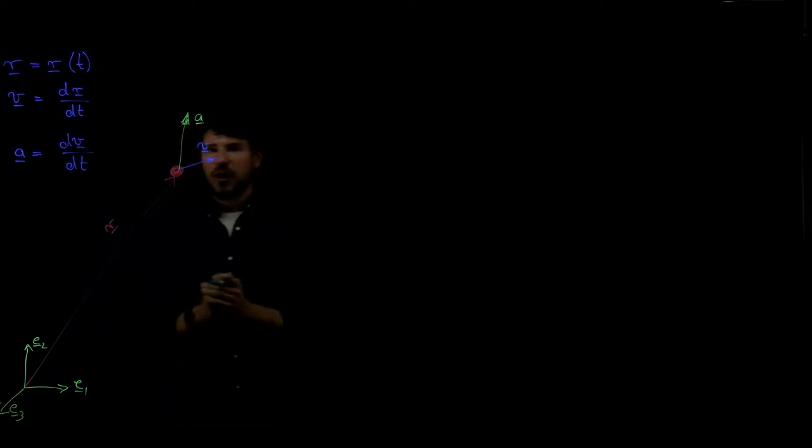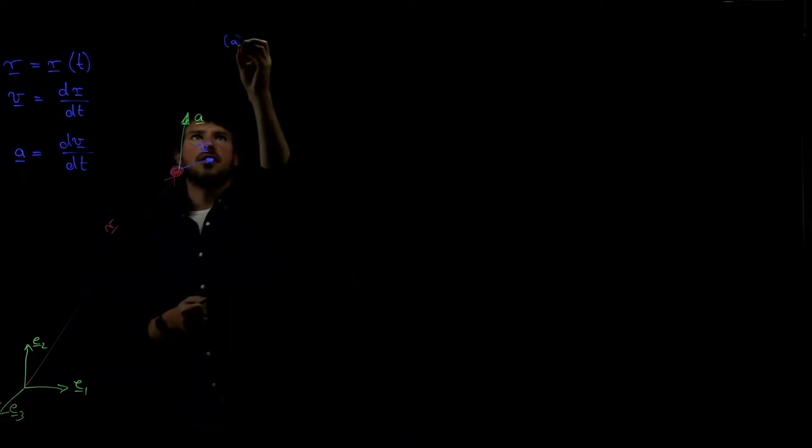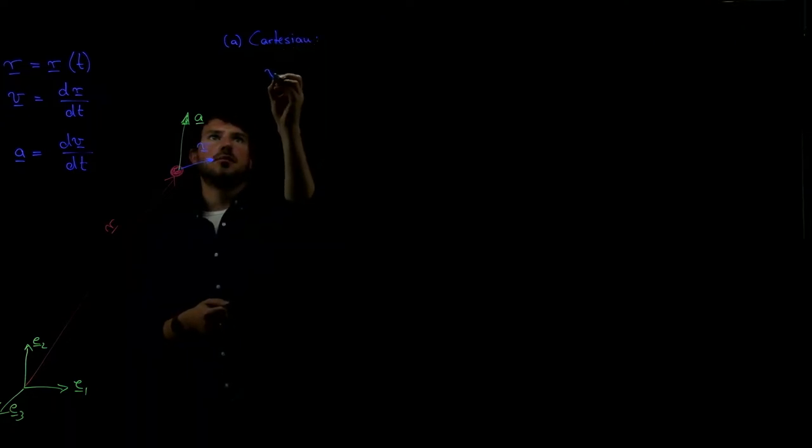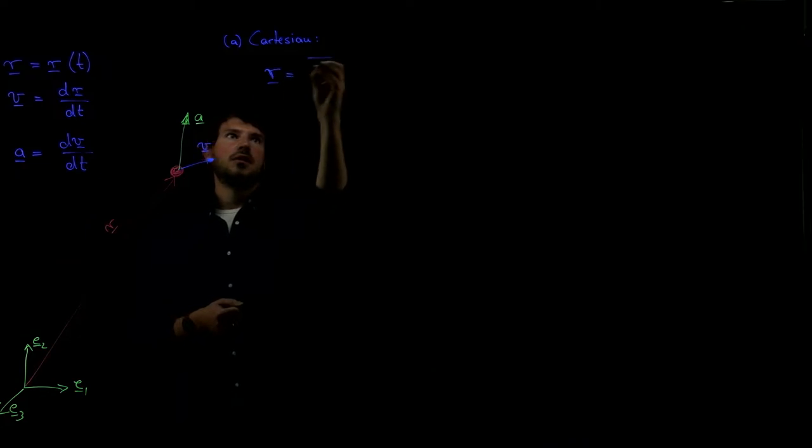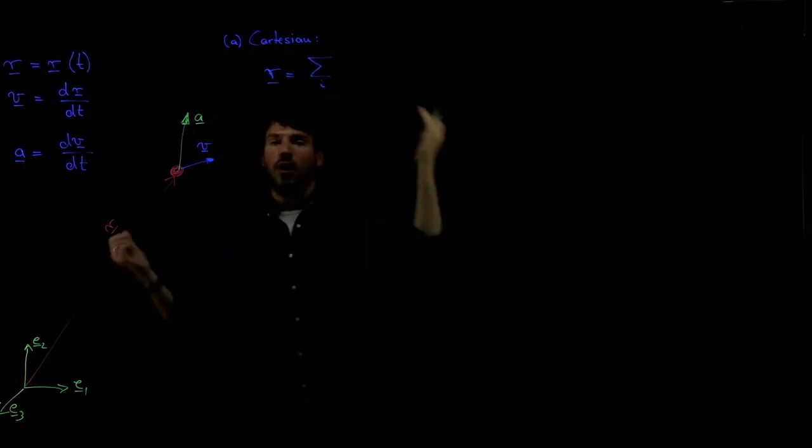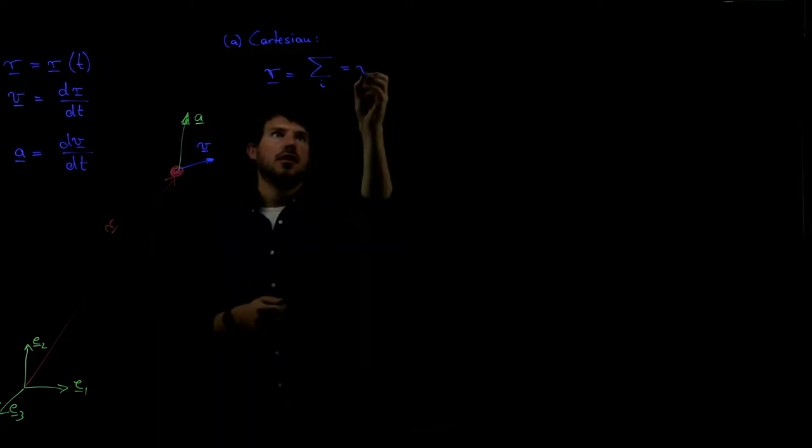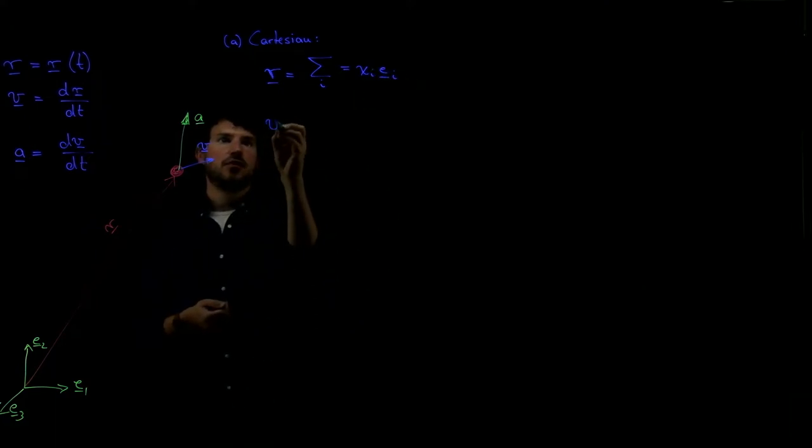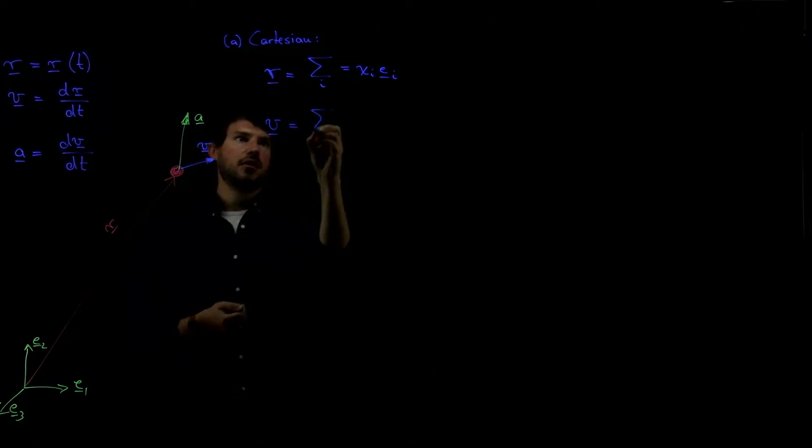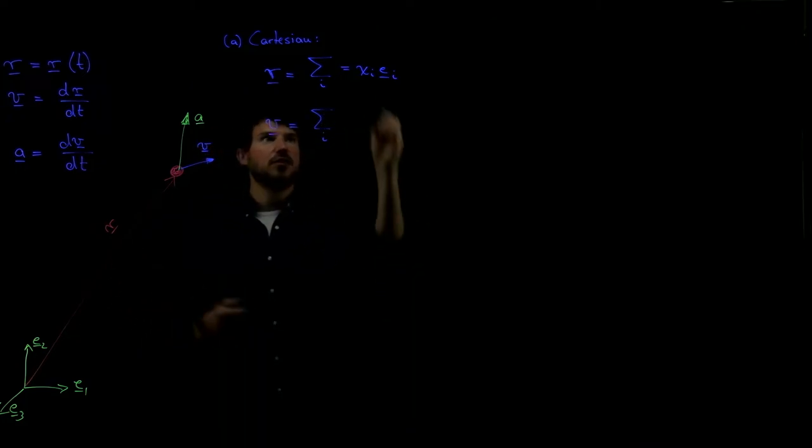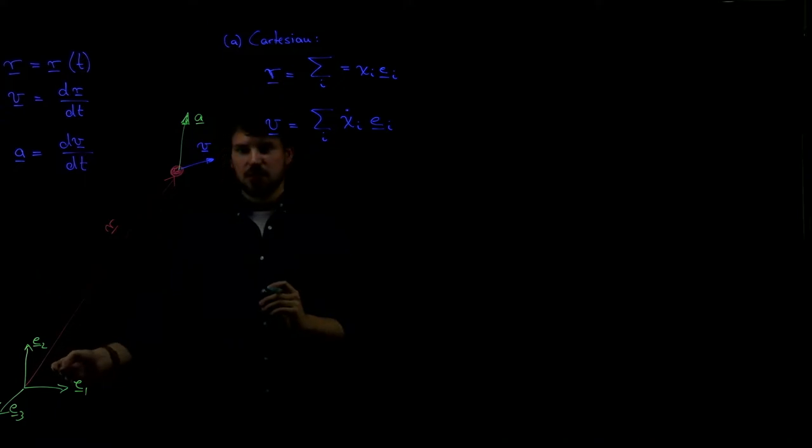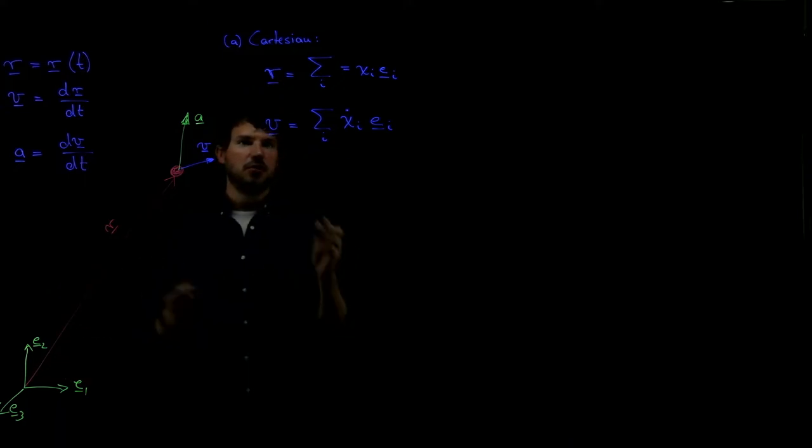And what that means is if I want to write, for example, my coordinates in a Cartesian frame, then my position vector is nothing else but r equals the sum over i from 1 to whatever dimension you're in, xi times ei. And as a consequence, when I take derivatives, the velocity would be nothing else but the time derivative with a dot on top of our components, of our coordinates. And ei remains unchanged because that system down here is fixed.